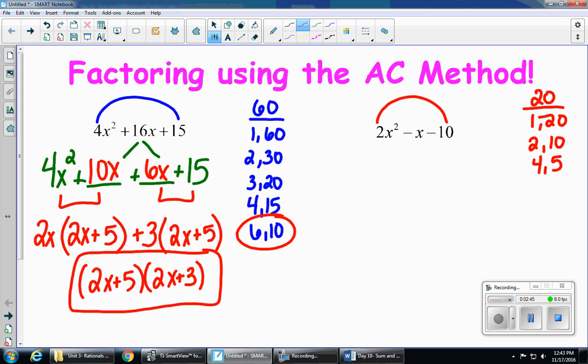And once again, your two outside pieces are going to get brought down. So I'm going to bring down the 2x squared and that minus 10. And I'm going to split that negative x into two pieces.